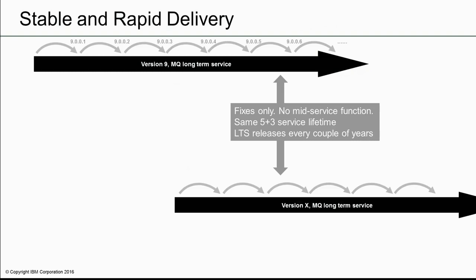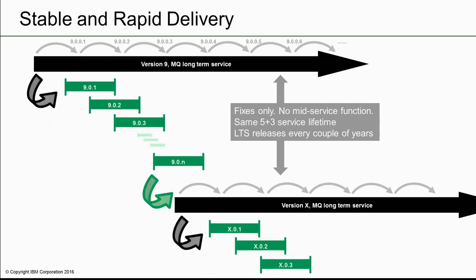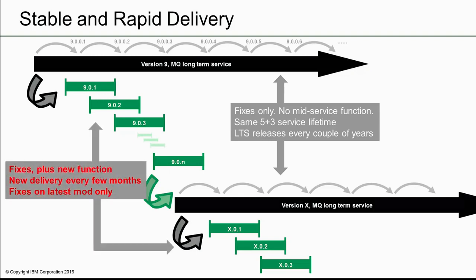The rapid delivery stream sits alongside the long-term stream, with new functions being delivered in modification levels — 901, 902, and so on. These mod levels will be supported for only a relatively short time, and you'll have to move from mod level to mod level in order to receive fixes, which will only be produced based on the latest modification level. Once a new long-term release is made available, the cycle begins again with a new set of mod levels.